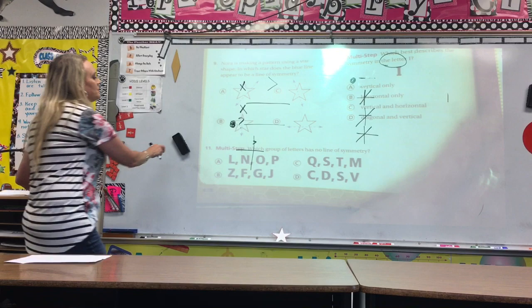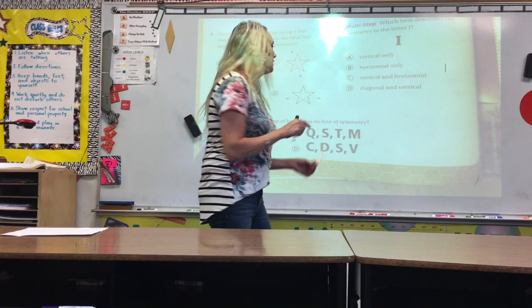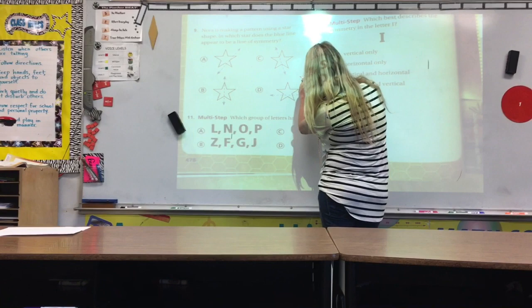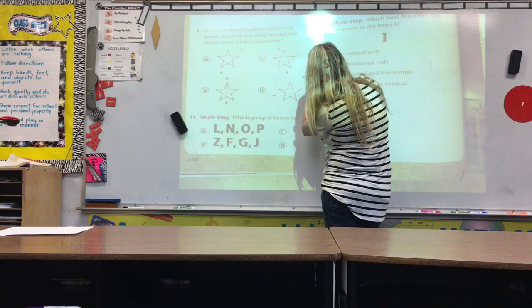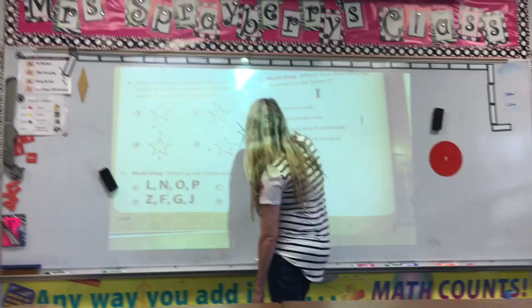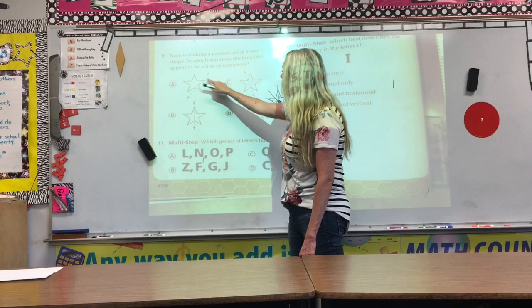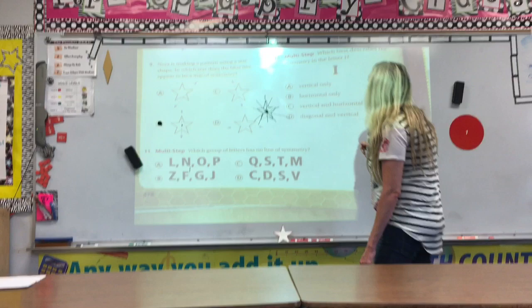Number 9, Nora is making a star shape in which star is the blue line appear to have a line of symmetry. So, every year if you were here, I would get you on a big board, and I have stars cut out. And if you have a star that is a perfect length on every side, you are actually going to have one, two, three, four, five lines of symmetry. Now, if I could draw a little better, it would look a little better. They should all come in the middle of the vertex. So, looking at the star, if you notice, I had to cut through the center to make it a line of symmetry. So, the only star that cuts through the center is B.